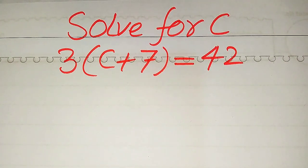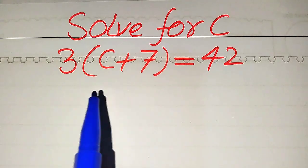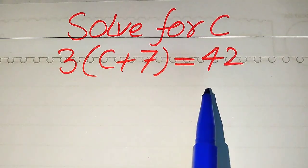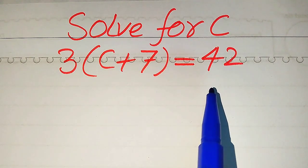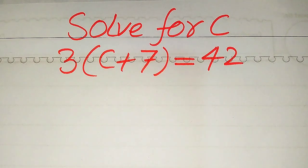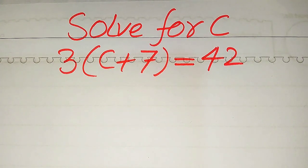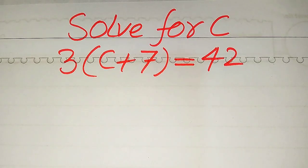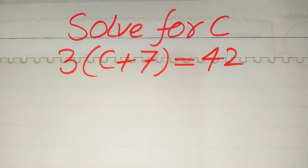Hello everyone. How to solve this problem for the values of c if we have 3 times of c plus 7 is equals to 42. We solve this problem for all the values of c. First we find all the roots of this equation, and at the end we will verify which of the roots are solutions of this equation and which of the roots are extraneous roots.